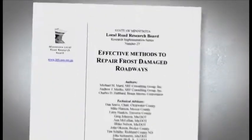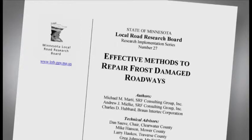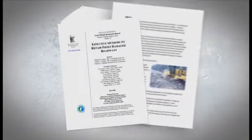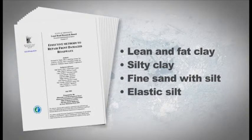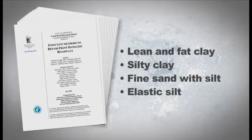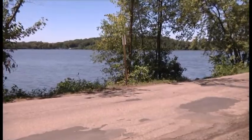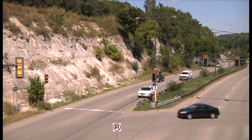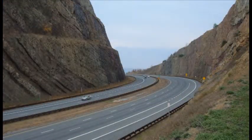In 2003, a Minnesota Local Road Research Board report provided more detail on how frost action occurs and showed how to avoid it. The report notes that frost damage is most likely to occur at transitions between roadway materials that differ in composition, consistency, and/or drainage characteristics. The report lists types of soil that may be frost susceptible, pointing out that all these types are fine-grained, have poor drainage characteristics, and tend to hold water. The groundwater that freezes to create frost heave can come from precipitation or nearby lakes, streams, swamps, or springs, and is more likely to cause a problem where there are natural or human-made swales, valleys, and cuts in the terrain that direct water toward the pavement.